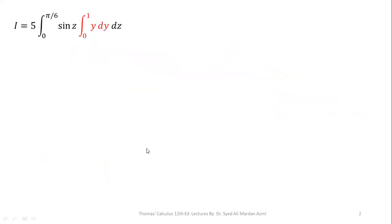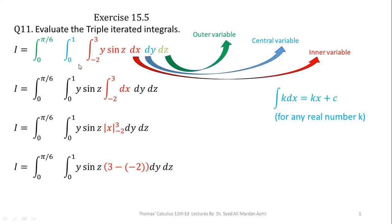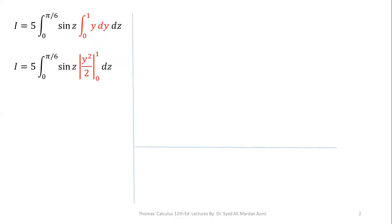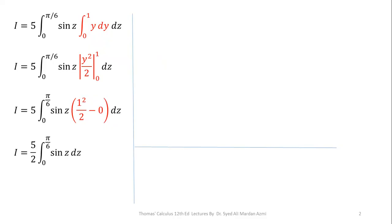After completing integration with respect to x, we move to integration with respect to y. Now y is our innermost remaining variable. With respect to y, sin(z) is a constant, so you can take it outside the inner integral. We then integrate y over limits 0 to 1: the integration of y is y²/2, evaluated from 0 to 1. Applying the fundamental theorem of calculus gives us 1/2. Taking out the 1/2 constant, we now have the integral equal to 5/2 times the limit from 0 to π/6 of sin(z) dz.